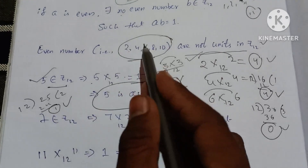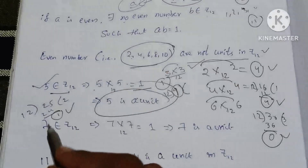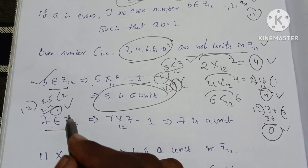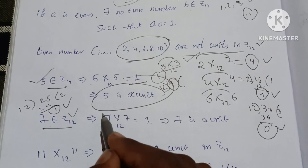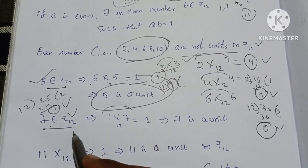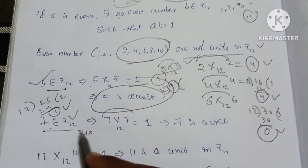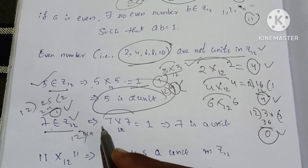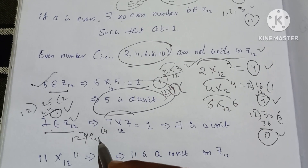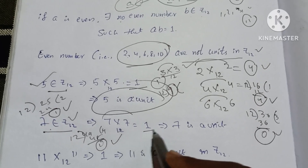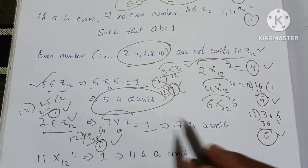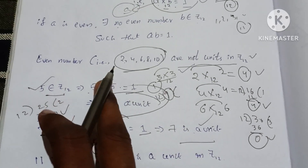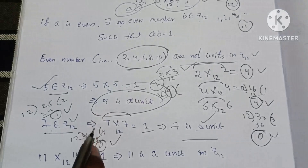Next, check 7. 7 belongs to Z₁₂. 7 into 7 is 49. Multiplication modulo 12: the remainder is 1. So 7 is a unit.